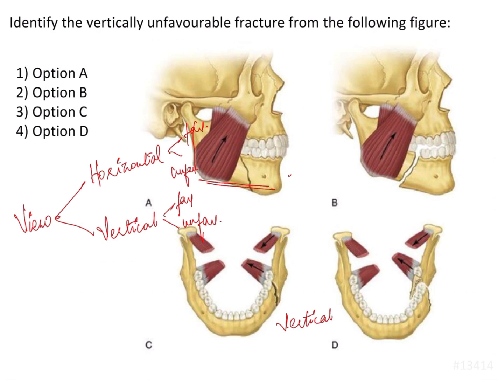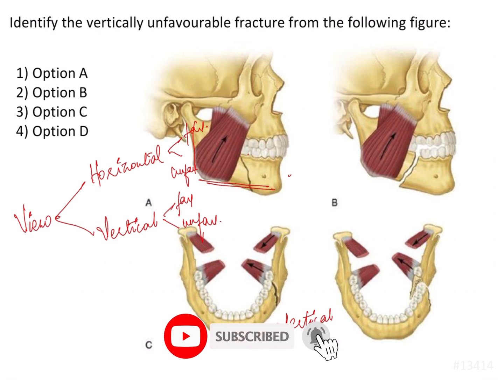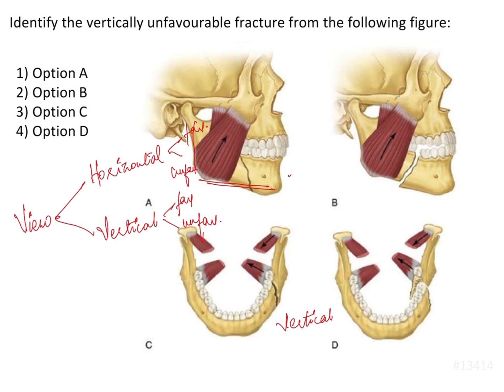In the angle region, the mandible provides insertion to two muscles. On the lateral aspect, it provides insertion to the masseter, whereas on the medial aspect it provides insertion to the medial pterygoid. Both muscles help in upward pull, that is, closing of the mandible.